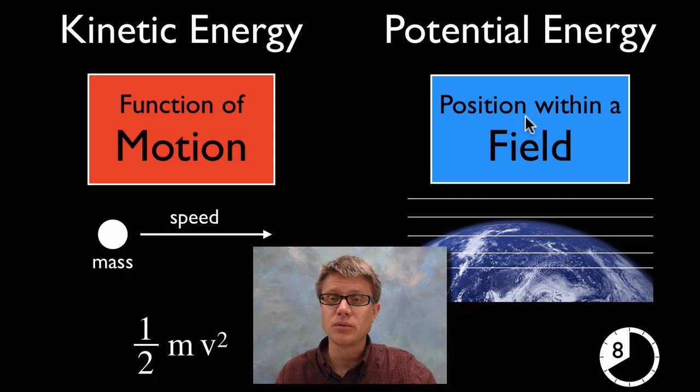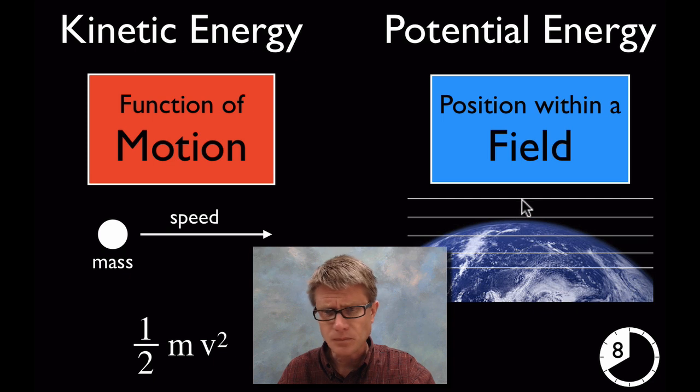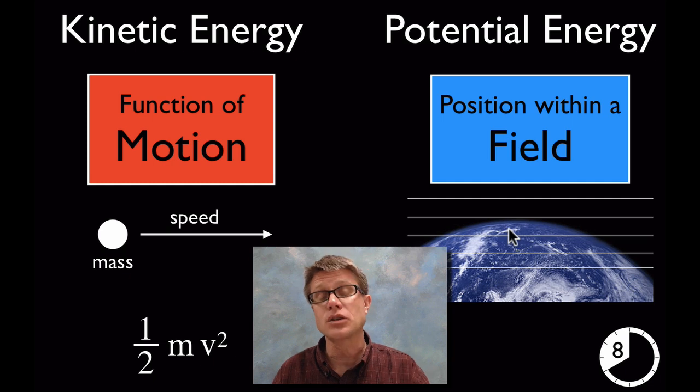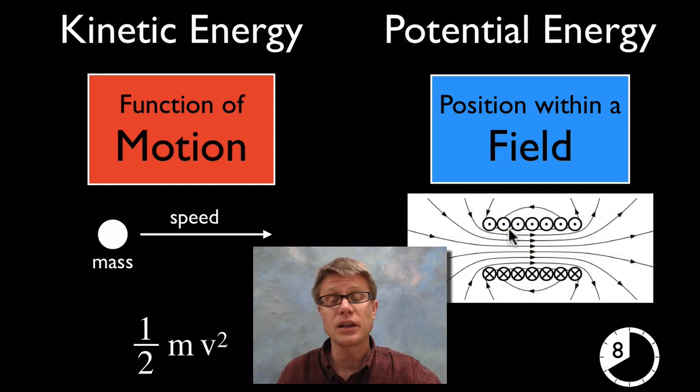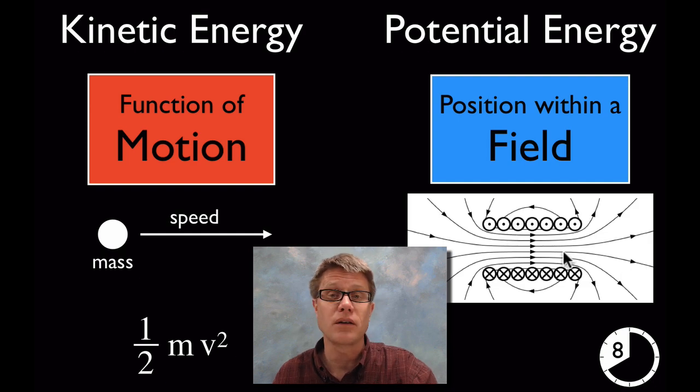And then position within a field we tend to call that potential energy. And so that's your position within a field. And so that could be for example an apple at the top of a tree. There's going to be a gravitational field created by the large mass of the earth. And as we move that apple up or down we're going to vary the amount of potential energy it has. But it's not only gravitational. It could be magnetic potential energy. Or it could be electromagnetic. It could be for example electrons within a solenoid like we have right here.